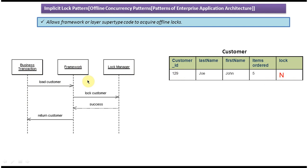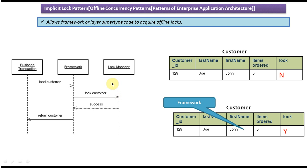This business transaction is trying to load customer 129. What the framework will do is, before it returns the customer, it will call the lock manager.